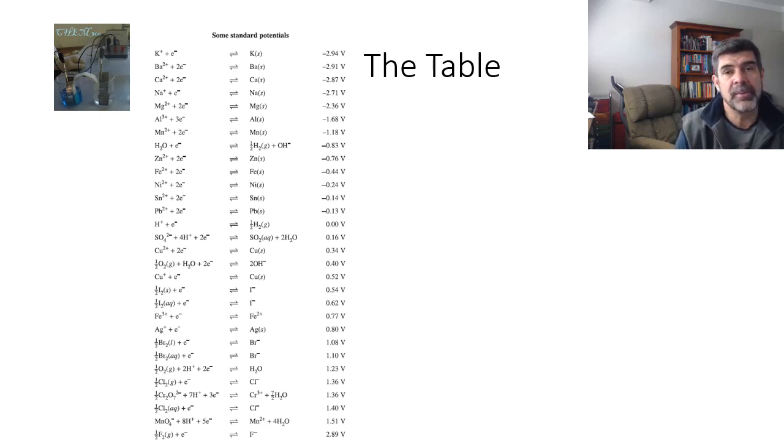The most important thing about the standard reduction potential table is two things. Firstly, each of these is written as a gain of electrons. So the whole table is about gain in electrons, which we said is RIG—reduction. Reduction is gain. These are all examples of half equations involving reduction of a particular species.